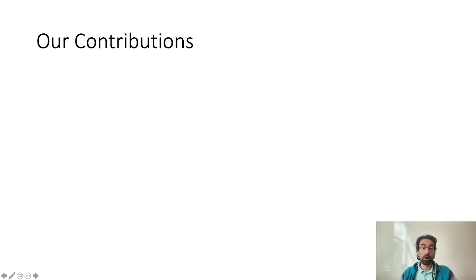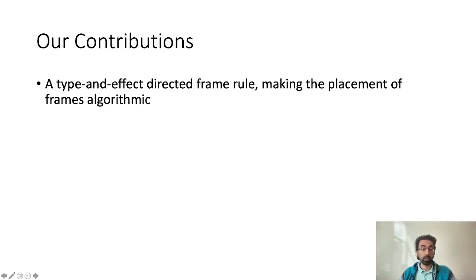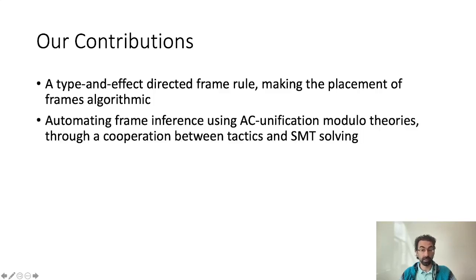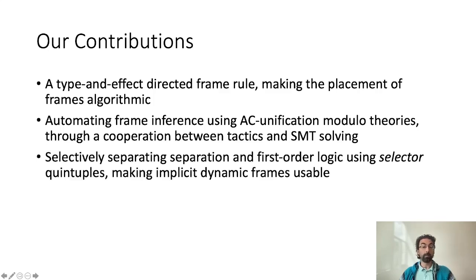To solve these issues, our contributions are the following. First, we propose a type and effect directed frame rule which makes applications of framing algorithmic. We then automate frame inference by encoding the problem as an associative commutative unification problem modulo theories. We provide a partial decision procedure for it that relies on cooperation between FSTAR tactics and SMT solving. To improve the usability of implicit dynamic frames, removing the need for ghost variables in swap, we show how to automatically separate verification conditions between separation logic and selector predicates, which are easily encodable to SMT.